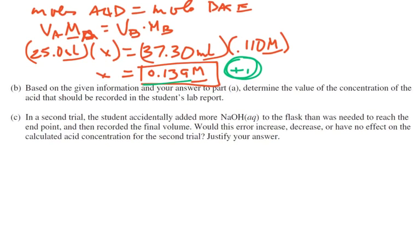Okay, last part here is kind of an error analysis. In the second trial, the student accidentally adds more NaOH to the flask than was needed to reach the endpoint and then recorded the final volume. Would this error increase, decrease, or have no effect on the calculated acid concentration for the second trial?